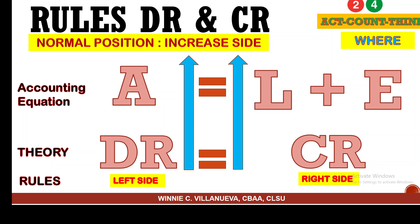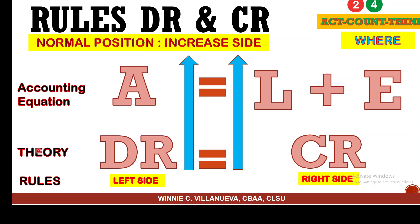If the increase of asset is on the left, you put it on the right when it decreases — that's four. For liability and equity, if the increased side is the right side, you put it on the left side to decrease liability and equity. That's six. So we already have six rules, and three more to go.